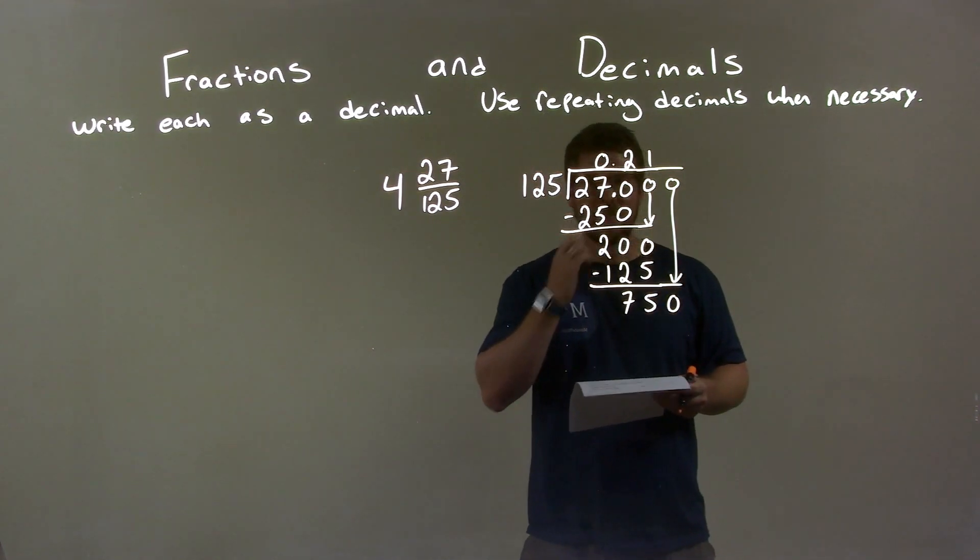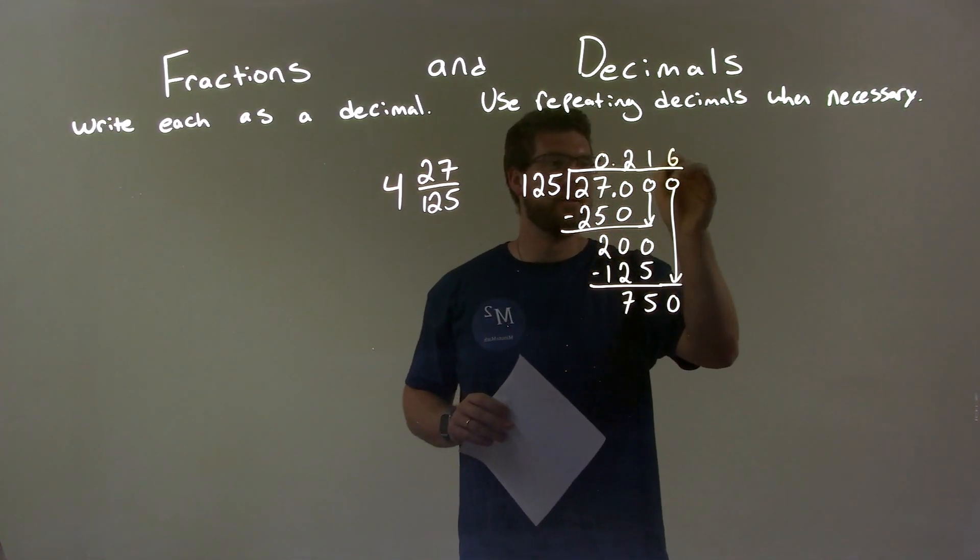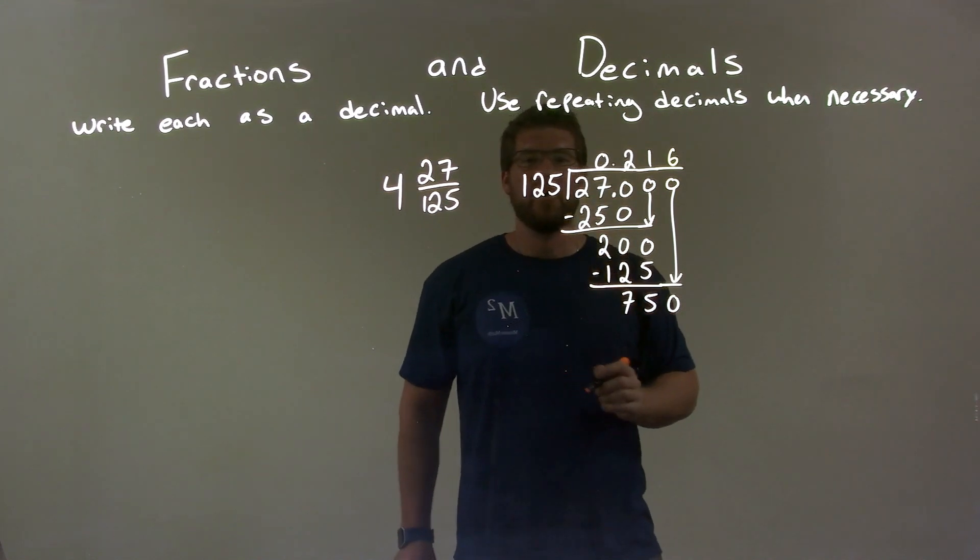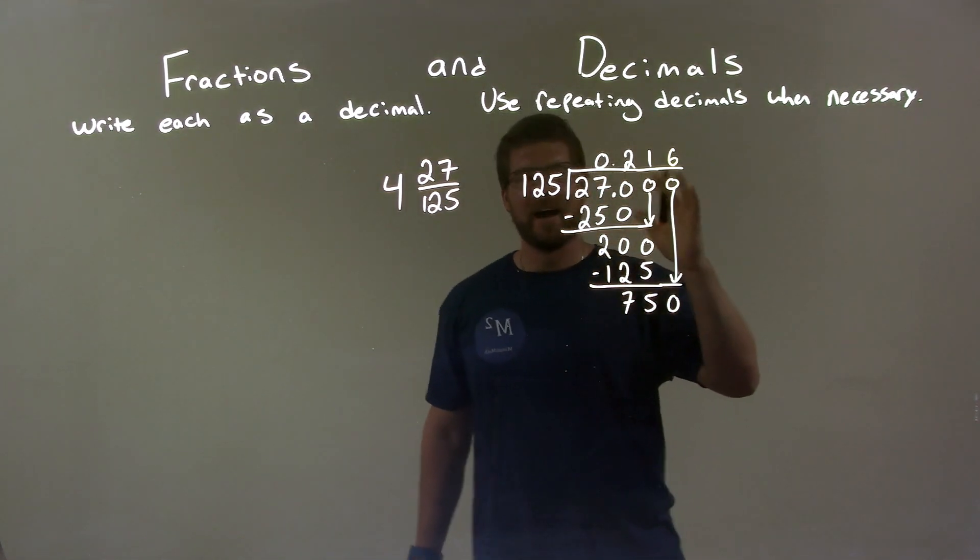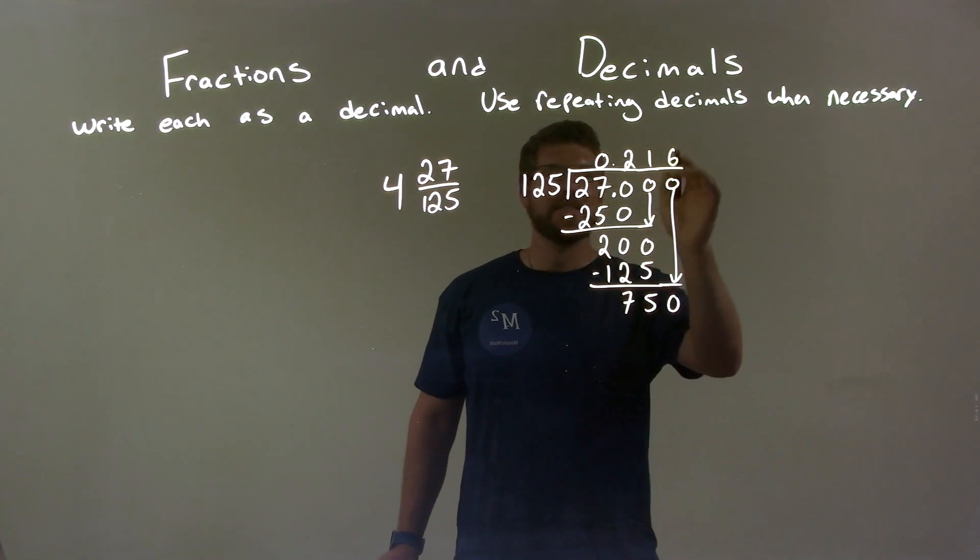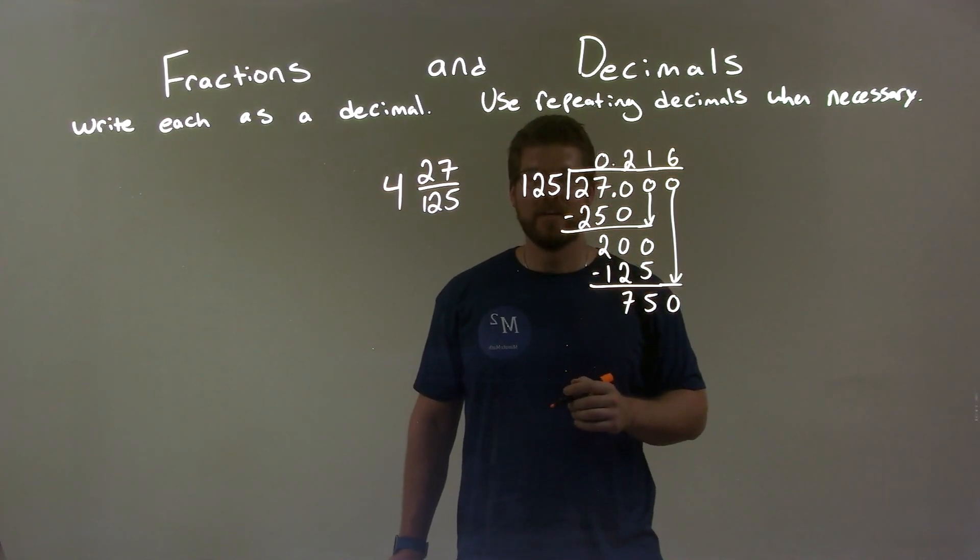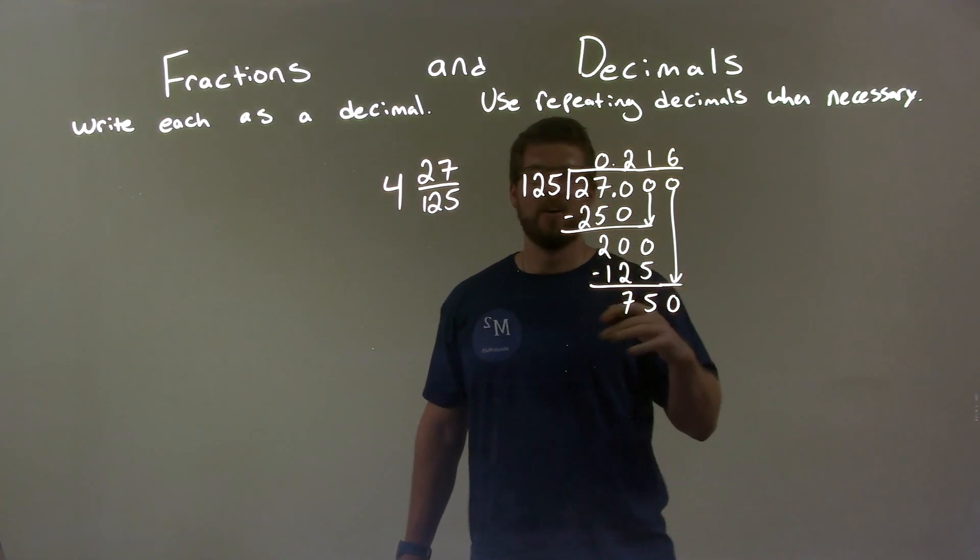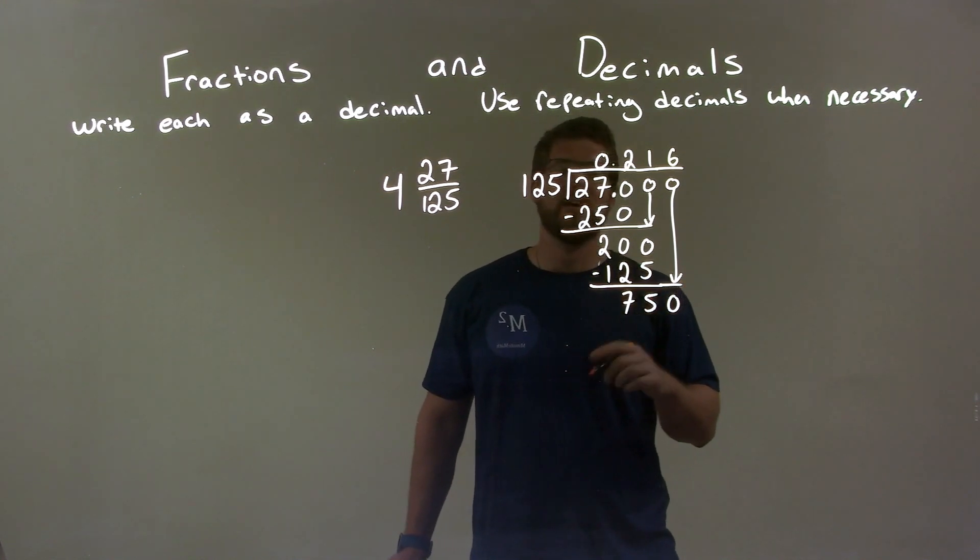What times 125 is 750? The answer is going to be 6 here. Because 6 times 100 is 600, and 6 times 25 is 150. So, 600 plus 150 is 750.